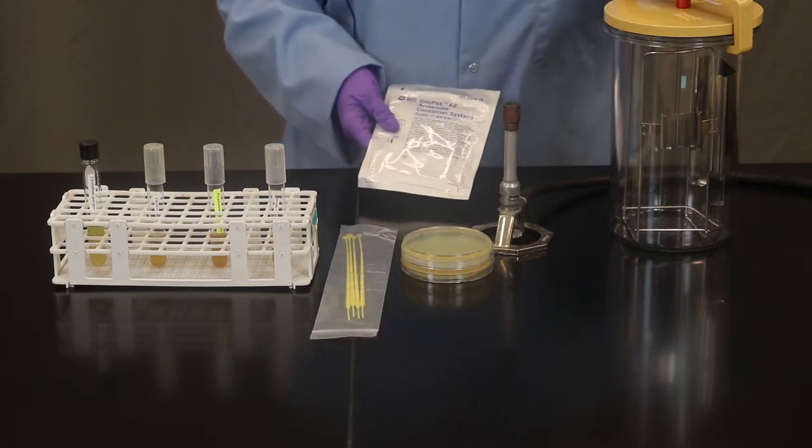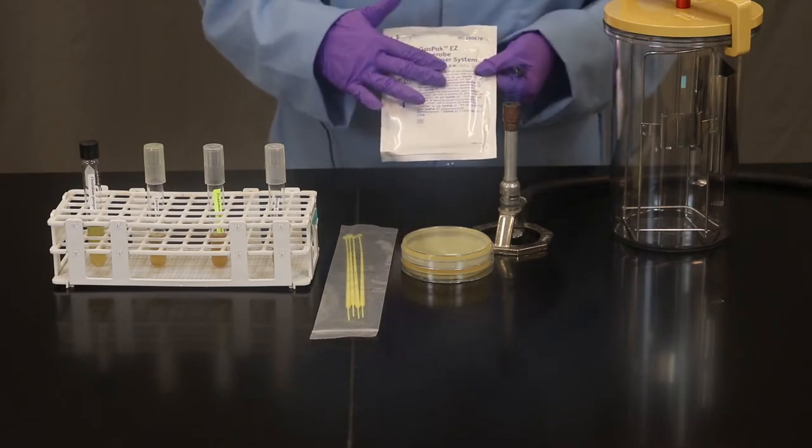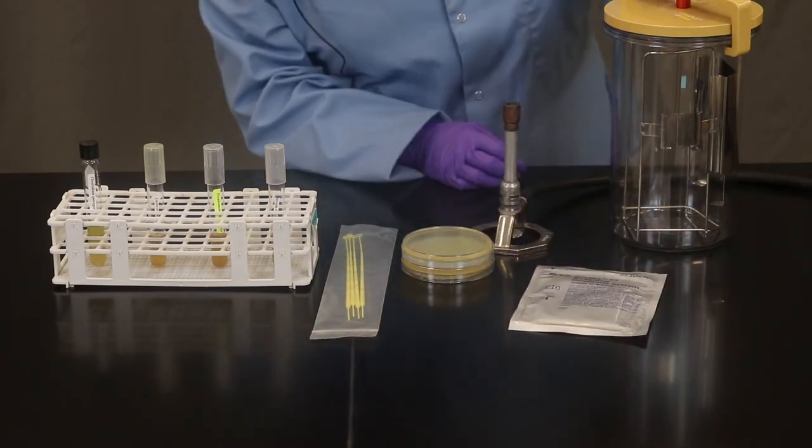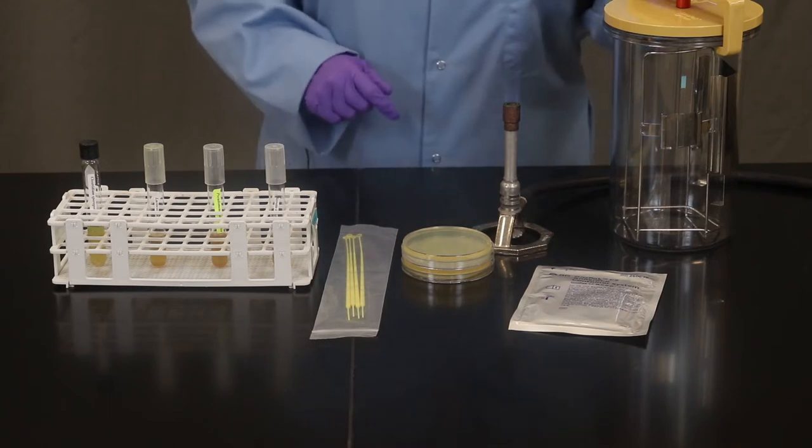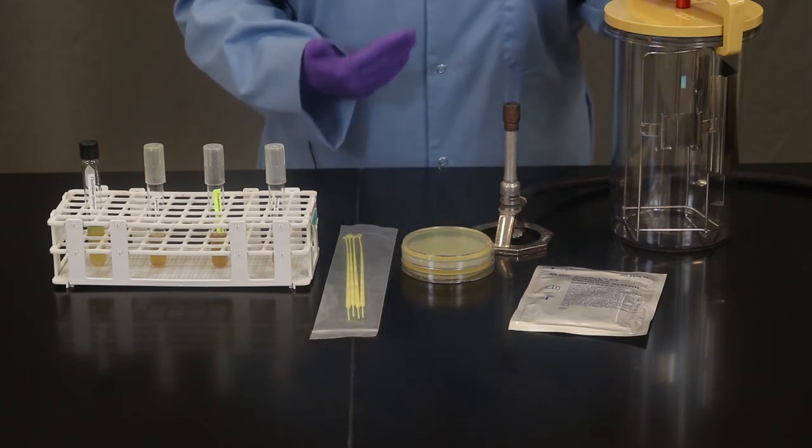So in order to do that we're going to have an anaerobic jar, a gas pack to help us remove the oxygen, and an indicator strip which tells us whether or not oxygen has been depleted in our jar.